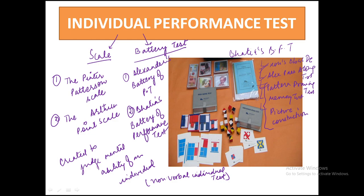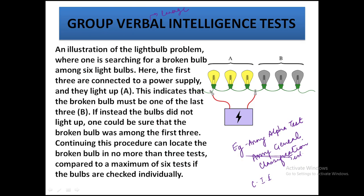Now, group verbal intelligence tests are those where a group of individuals are tested together, and language is used. Examples include the Army Alpha Test, which was used in World War II, the Army General Classification Test, and the CIE Verbal Test. These three are the primary examples of group verbal intelligence tests.